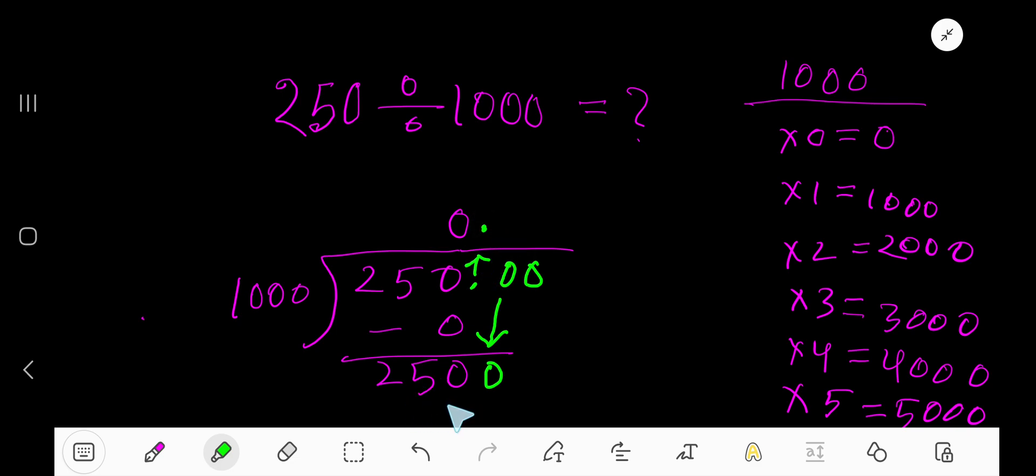Now you have 2500. 1000 goes into 2500 how many times? 100, 1000 times 0 is 0. 1000 times 1 is 1000. Just add 1000 with this 0, that is the previous step. Then 1000 times 2, just add 1000 with this previous step, 1000. Then 2000. Then 1000 times 3, you are getting, just add 1000 with this previous step, you are getting 3000. So this is the way.